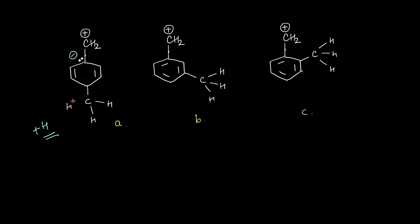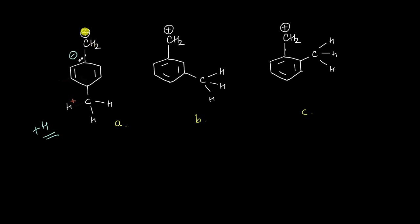We can keep delocalizing these electrons further, and ultimately this negative charge will land over here. Just like in resonance, this methyl group will bring about a lone pair of electrons — a negative charge — at only these very specific positions. When the lone pair lands right next to the empty orbital of this carbon atom — a positively charged carbon always signifies an empty orbital — both can overlap and this is going to create a pi bond right over here.